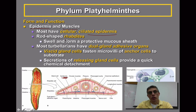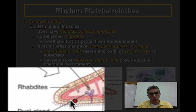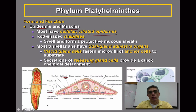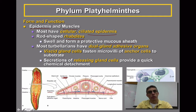Within that epidermis, you're going to have what we call rod-shaped rhabdites. The rhabdites are going to swell and form what we consider a protective mucus sheath around the animal. This is protective in terms of protecting it from other types of animals and possibly even from disease or infection within its environment.